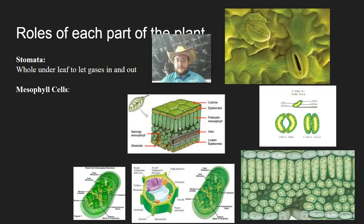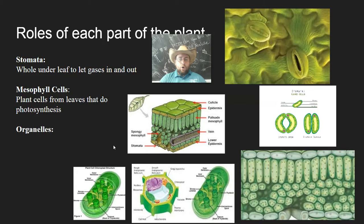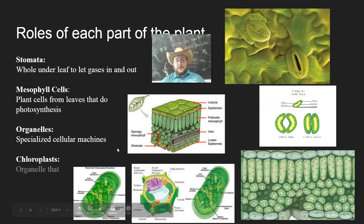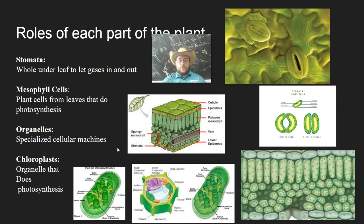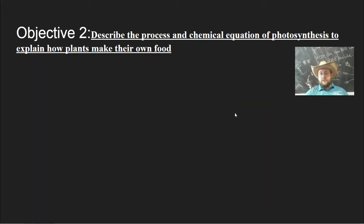The mesophyll cells are the cells on the inside of the leaves which actually do the photosynthesis. They're called mesophyll because 'meso' means middle and 'phyll' means filled with chlorophyll, which is a green pigment that helps plants do photosynthesis. Organelles inside these mesophyll cells are the specialized machinery that helps the cell do its job, the most important of which is the chloroplast, which is the organelle that actually does photosynthesis.